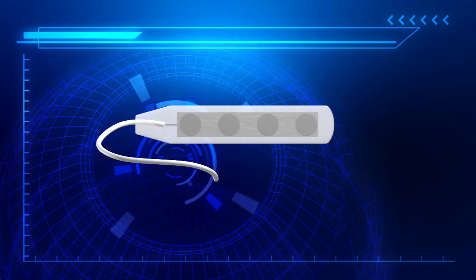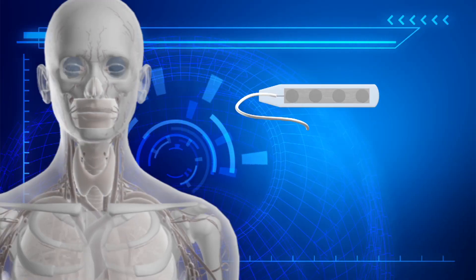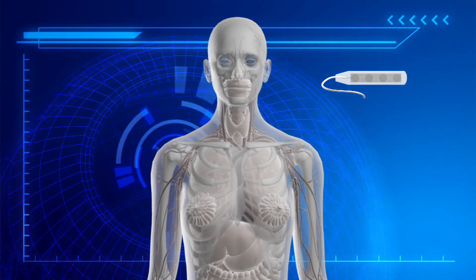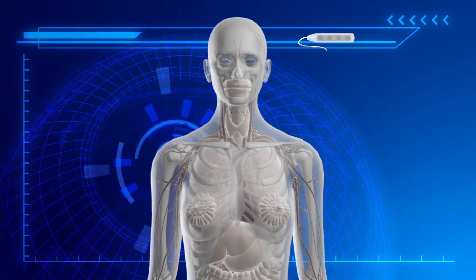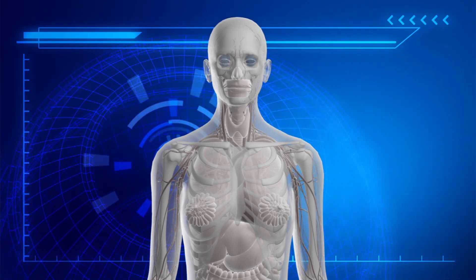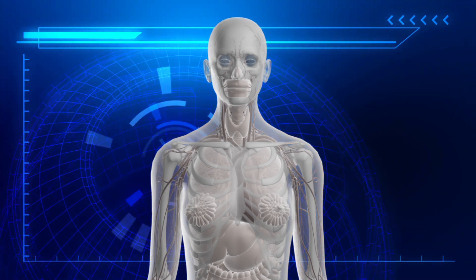The electrocorticograph consists of four roughly five centimeter long electrode strips. Each strip contains four small electrodes. The electrode strips are implanted inside the skull against the brain.